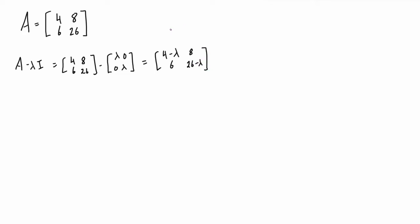So if we take the determinant of A minus lambda I, we can write that with our determinant bars here, and it's just 4 minus lambda, 8, 6, and 26 minus lambda.